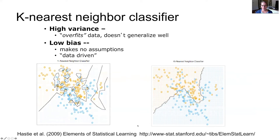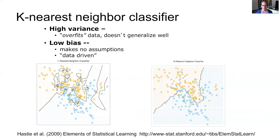In a K-nearest neighbor classifier, to classify a new observation — a combination of values of two predictor variables in a two-dimensional data space — you simply classify that combination with respect to its nearest neighbors, giving it the same classification. That could be its single nearest neighbor, resulting in a very irregular surface, or a smoother boundary using the 15 nearest neighbors. This class of model is said to have high variance because the rules don't generalize very well.